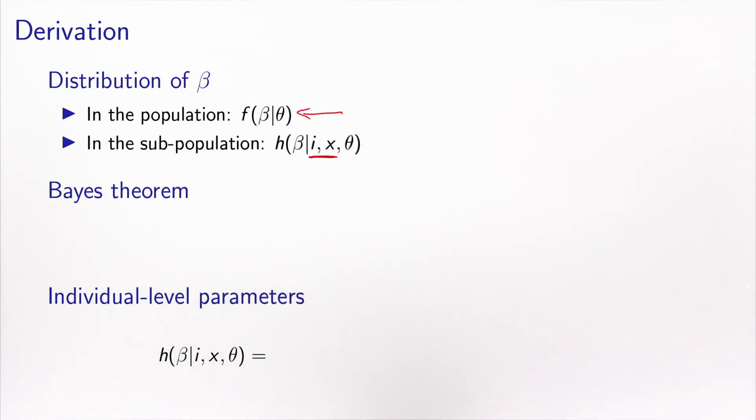And I will use Bayes' theorem to actually calculate this quantity. So I will consider the joint distribution, let's call it g, of i and beta, given x and theta. And I can write this in two ways.